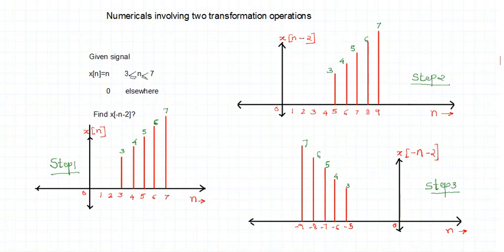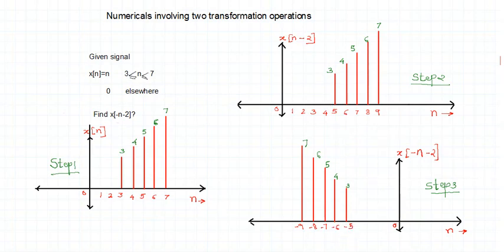Next step: I have to apply the minus to n — this indicates time reversal. I do time reversal of the time-shifted signal. Sample at 5 appears at minus 5. Sample at 6 appears at minus 6, maintaining magnitudes. Sample at 7 appears at minus 7, and sample at 9 appears at minus 9. This is the result of X(-n - 2): first perform time shifting, then perform time reversal to get the correct resultant signal.